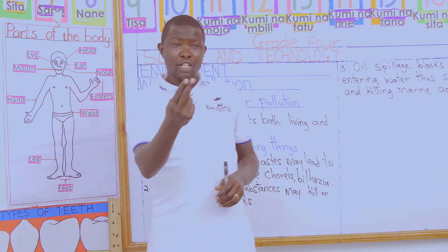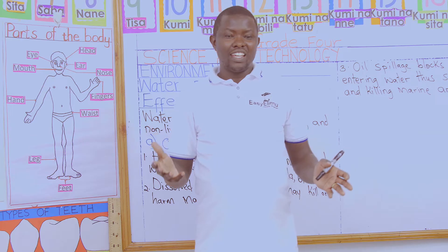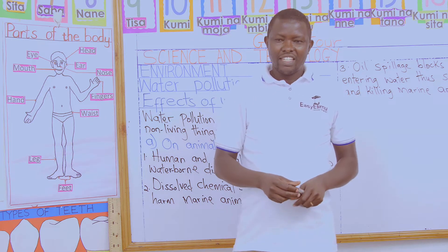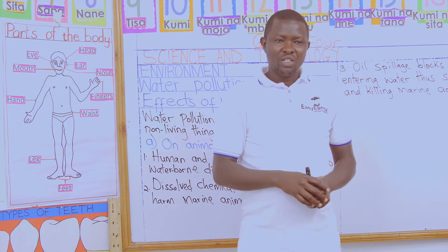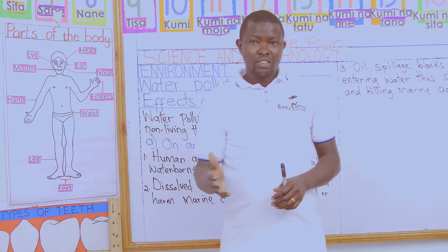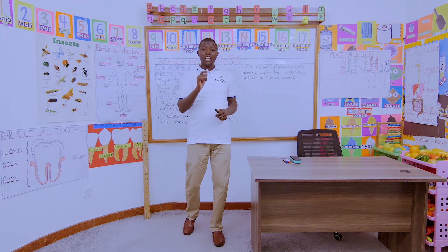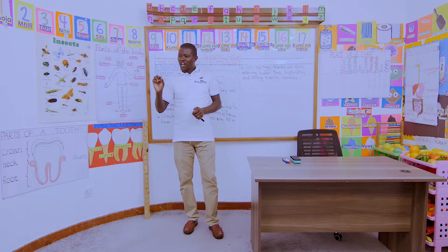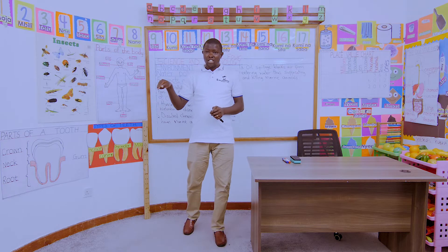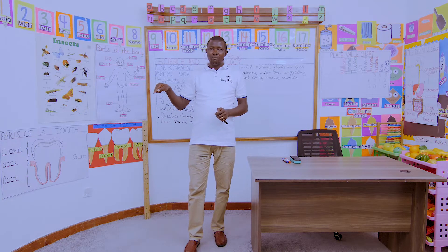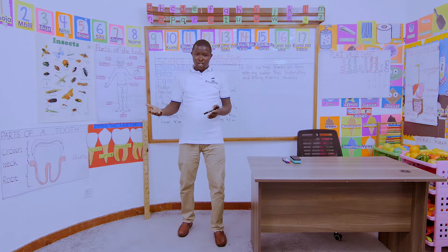Also in picture number two, what else can you see? You can see a ship moving in water, but it has an oil leakage. So what is happening? You can see there are fish dying — dead fish — because of the oil spillage.